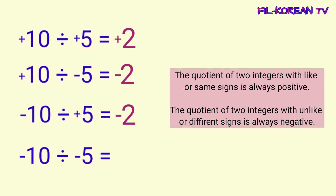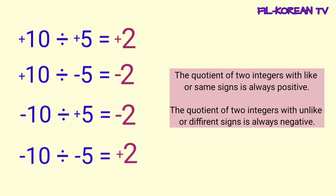Now, let's give the quotient of negative 10 divided by negative 5. 10 divided by 5 equals 2. Affix a positive sign to the quotient because the numbers that we divide have the same signs — they are both negative integers. The quotient is positive 2. I hope you learned in this video.